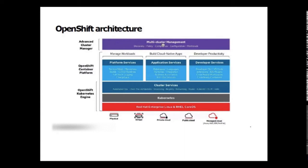The first three layers form the OpenShift Kubernetes Engine. Adding all the necessary services on top makes it the OpenShift Container Platform. You also have multi-cluster management services — the Advanced Cluster Manager — which helps you manage configuration, workloads, policies, and compliance across multiple clusters.